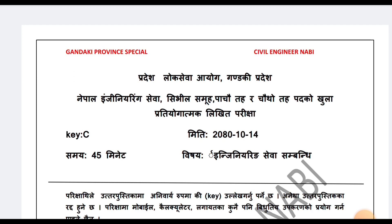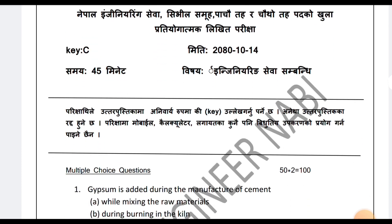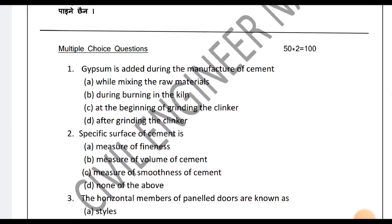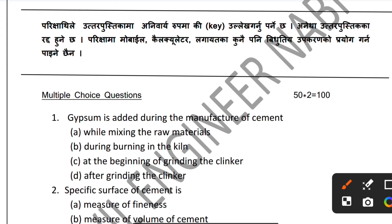Question 1: Gypsum is added during the manufacture of cement. Options are: 2 to 4 percent while mixing the raw material, during burning in the kiln, at the beginning of grinding the clinker, or after grinding the clinker.